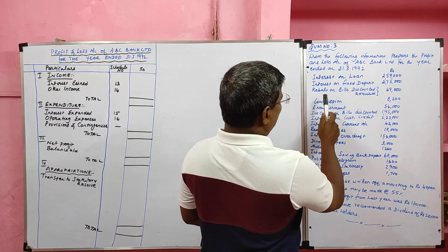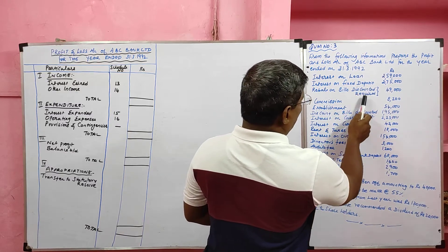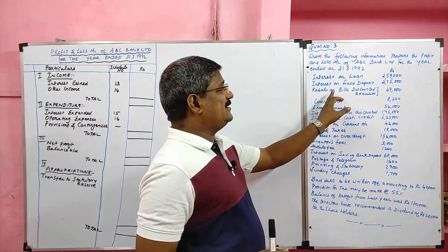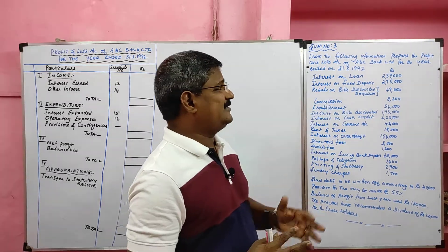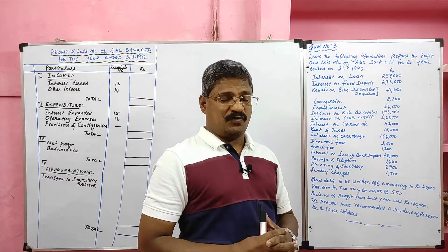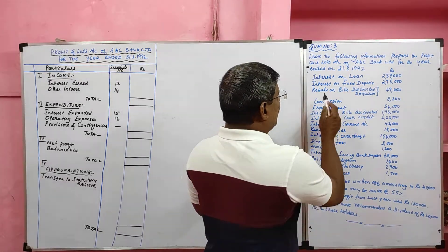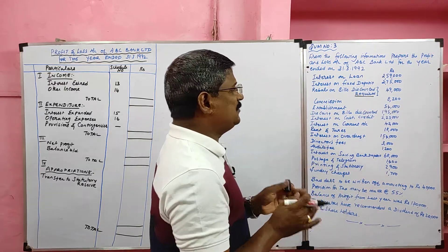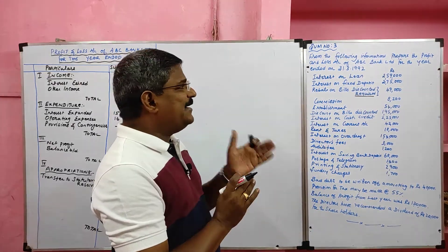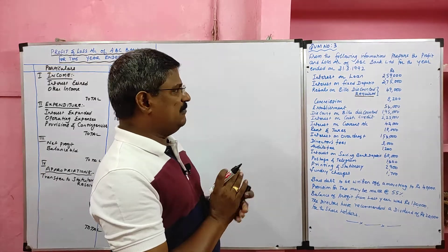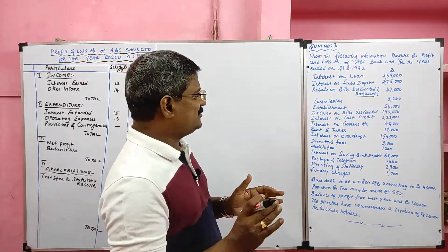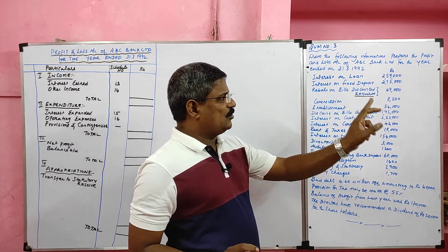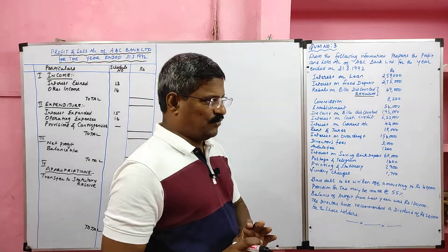The given information includes interest on loan, interest on fixed deposit, and rebate on bill discounted required. Generally, if rebate on bill discounted is given in the trial balance, it will go to the balance sheet liability side under other liabilities and provisions. But here, 'rebate on bill discounted required' is given — if 'required' is specified, we should assume it as the current year's rebate on bill discounted, and it should be deducted from discount on bill discounted in Schedule 13.